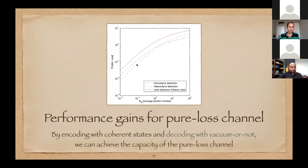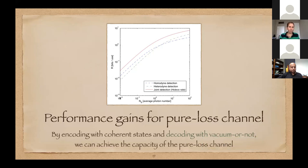For the pure loss channel, there can be tremendous performance gains from collective measurements. Showing rates in bits per channel use versus photon number allowed at the input, you get a big performance gain in the low photon number regime. The red line is the quantum limit — also called the Holevo rate — and the other lines are what you can achieve using classical schemes such as homodyne or heterodyne detection.